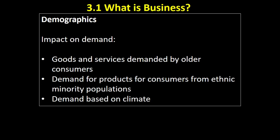Demand for products for consumers from ethnic minority populations — if migration brings people from abroad, they may wish to consume different goods and services, so businesses may look to supply them. I think about the local Tesco that I had in London, which had an aisle dedicated towards Bangladeshi food. Supermarkets often are aware of changes in their population, the ethnicity of people in that area, and may well adjust their product offering to suit local demand.